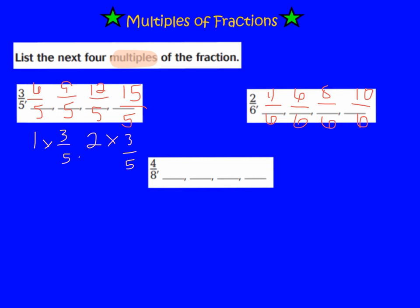Okay, math geniuses, it's your turn. We are going to list the next 4 multiples of 4/8. Remember, use your numerator and skip count by 4/8. Press play when you're ready to go over the answer. The multiples of 4/8 are: 4/8, then 8/8, 12/8, 16/8, and 20/8. I'm basically skip counting all my numerators by 4s, and my denominator stays an 8.